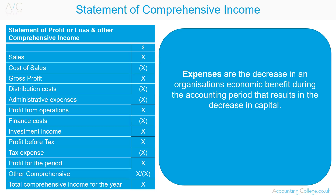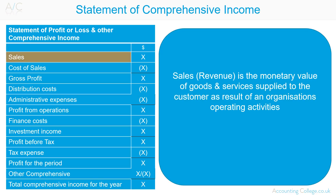Shown here is a very basic pro forma of the Statement of Comprehensive Income. First you take your sales figure — you may also see sales referred to as revenue. Sales or revenue is the monetary value of goods and services supplied to the customer, and is a result of an organisation's operating activities, i.e. selling goods or providing a service.